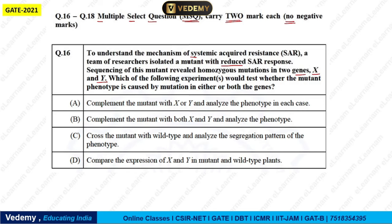The question asks: which of the following experiments would test whether the mutant phenotype is caused by a mutation in either or both genes? We need to determine whether the reduced SAR response is due to a mutation in only one gene or in both genes X and Y.